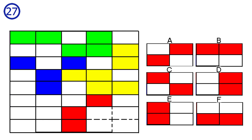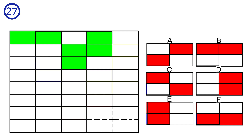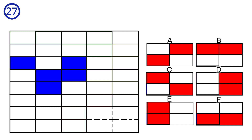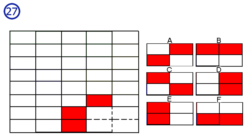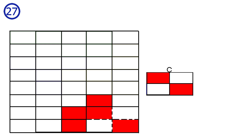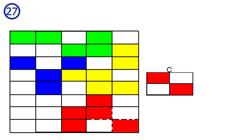Puzzle 27. Green shape, yellow shape, blue shape — it has one tile outside of the grid. And a red shape, which we complete, matching answer C. For the red shape there is also one tile outside of the grid. The complete grid looks like this.